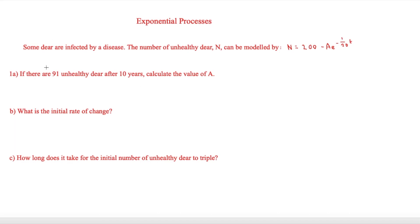We know that n is going to be equal to 91, as it says that in the question, 91 unhealthy deer. Then we know that's going to be 200 minus A, we've got to keep that's the thing we're trying to find, e to the minus 1 over 20, and then t is 10, so times 10.